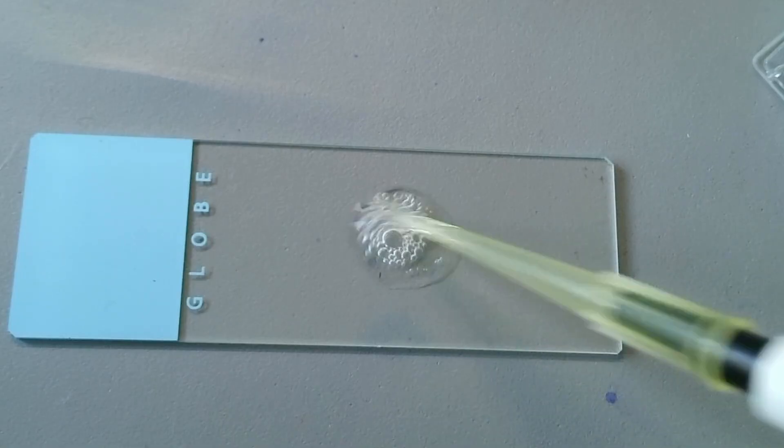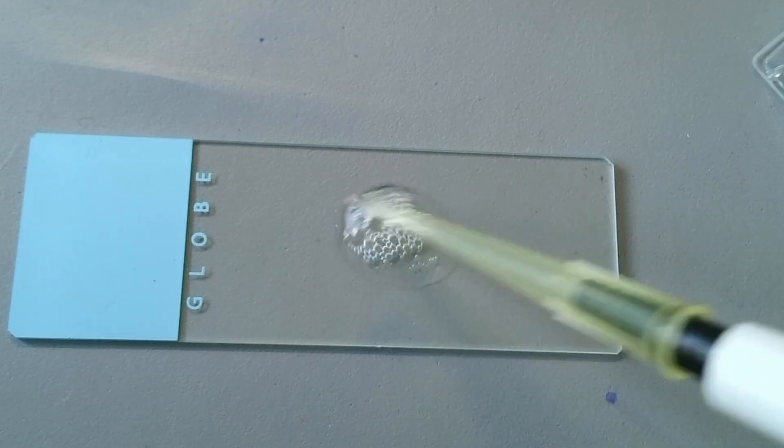And a little bit of a disadvantage, again, of course, is that sometimes there are quite a lot of bubbles formed this way. But generally, when you put the cover glass on top, then many of the bubbles are actually pressed to the side again and disappear. So even that is not a big problem.